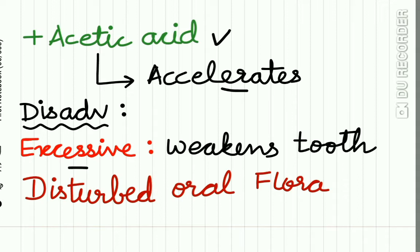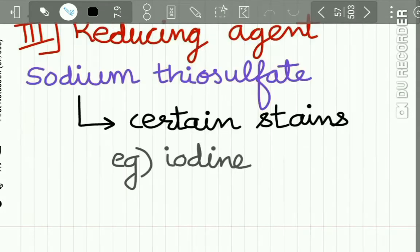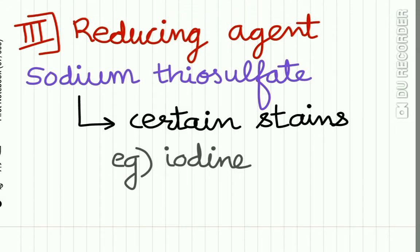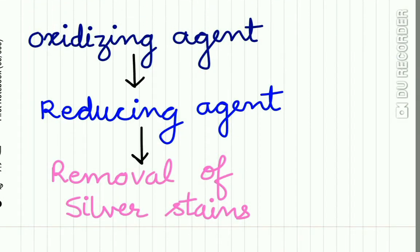The disadvantage of using chlorine-releasing agents is that excessive use may weaken the tooth and cause disturbance of the oral microbial flora. The third kind of bleaching agent is a reducing agent — sodium thiosulphate — which removes certain stains such as iodine stains. To remove silver stains from the tooth, an oxidizing agent followed by a reducing agent is used in combination.